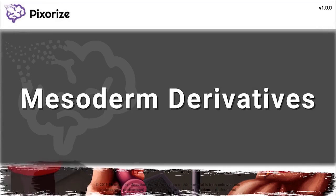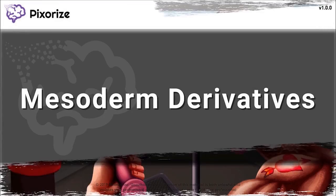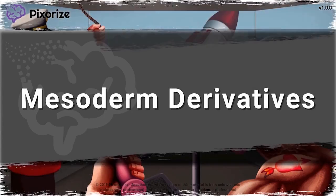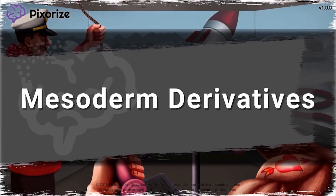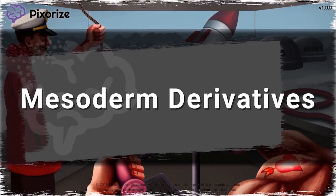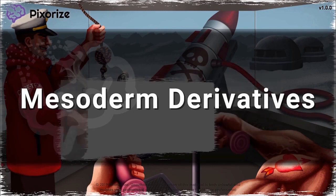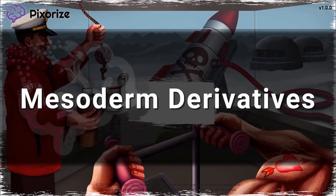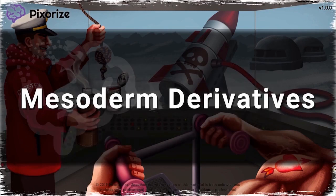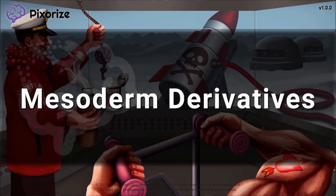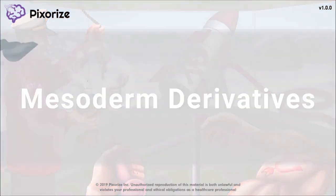The mesoderm is the middle germ layer that arises during embryonic development. In this video, we'll get you ready for test day by introducing a handy visual mnemonic to help you remember the major human structures that the mesoderm gives rise to.